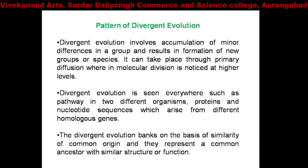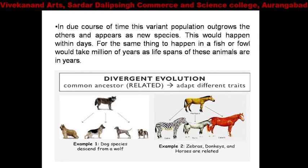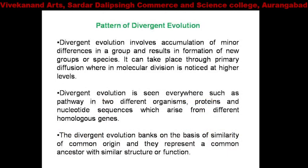Divergent evolution is seen everywhere, such as pathways in two different organisms — proteins and nucleotide sequences which arise from different homologous genes. At the molecular level, divergent evolution study helps us understand how one species has diverged from another. It is based on the similarity of common origin and represents a common ancestor with similar structure or function.